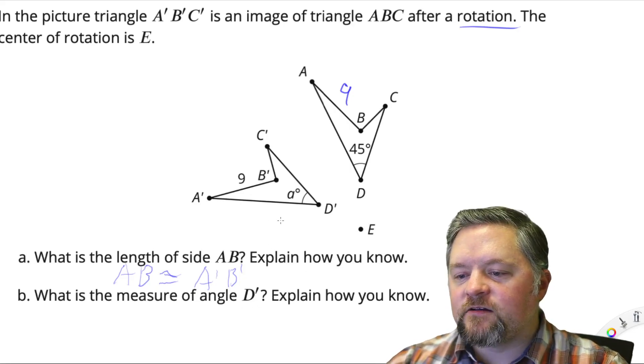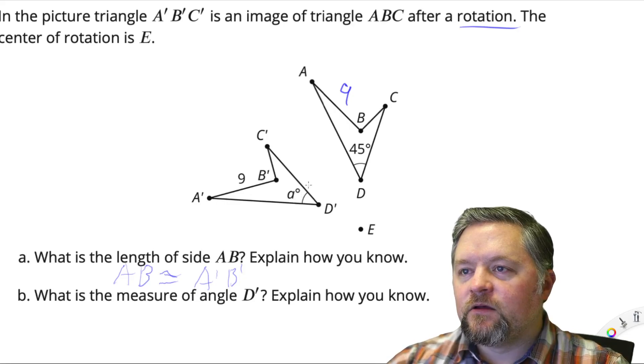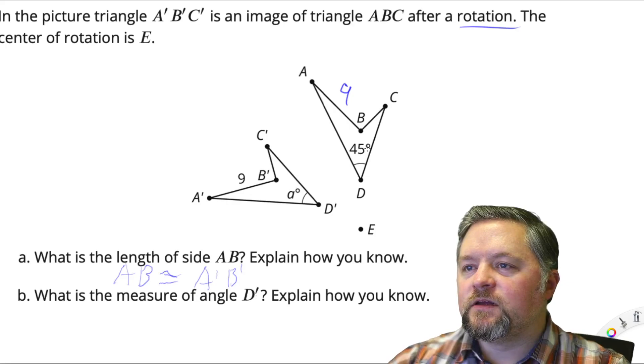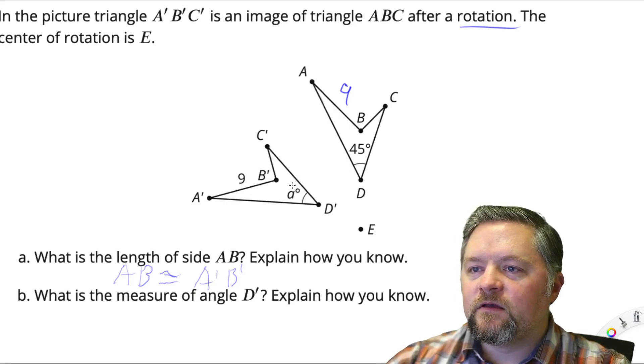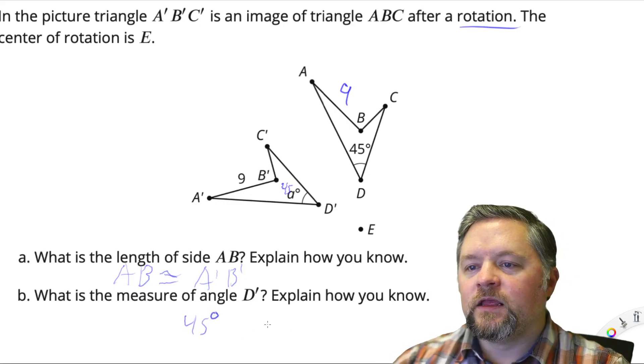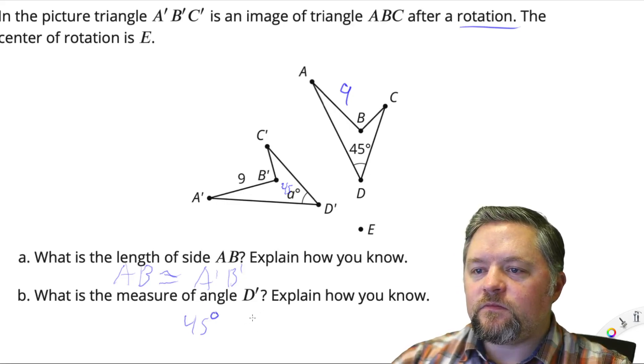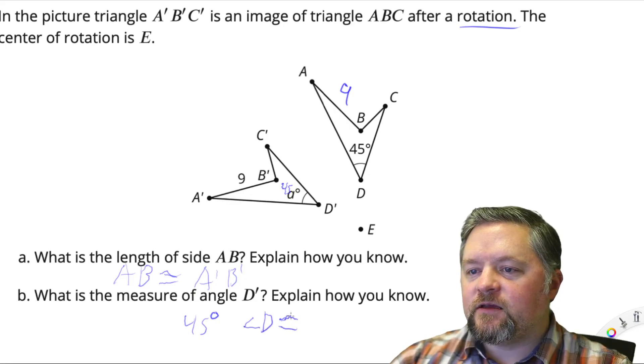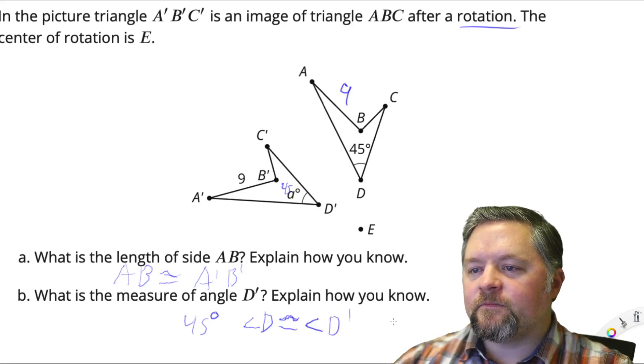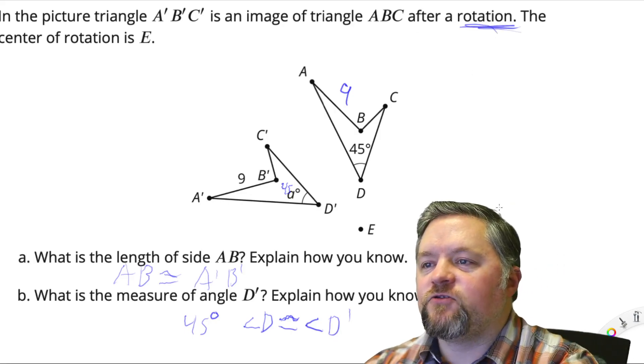What's the measure of angle D? Well, or what's the angle of D prime? D is 45, so D prime also has to be 45. Explain how you know? Because angle D has to be congruent to angle D prime, because a rotation is a rigid transformation.